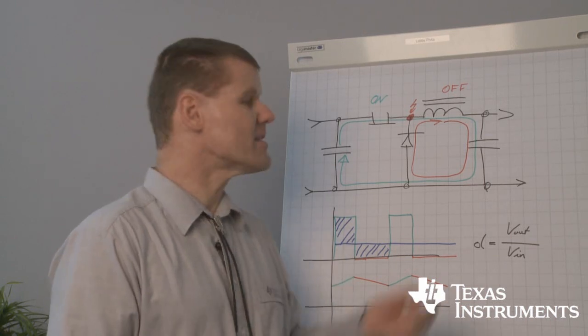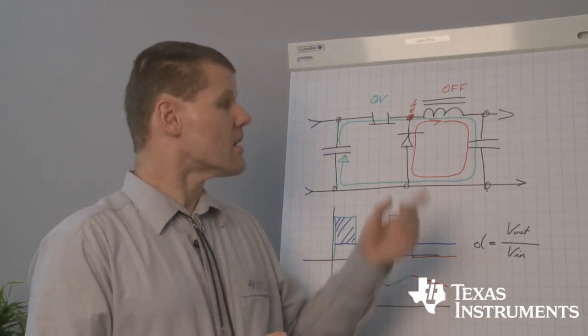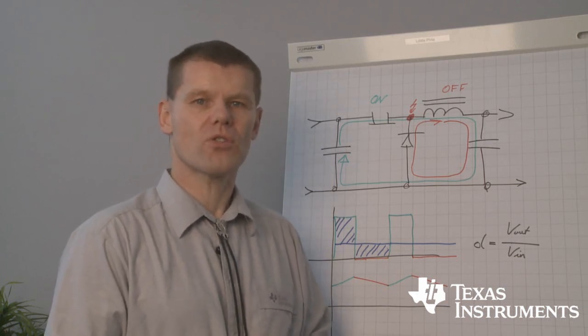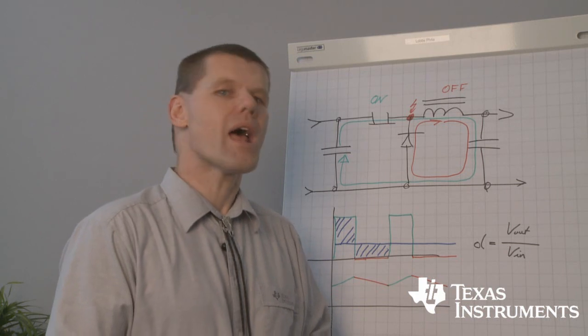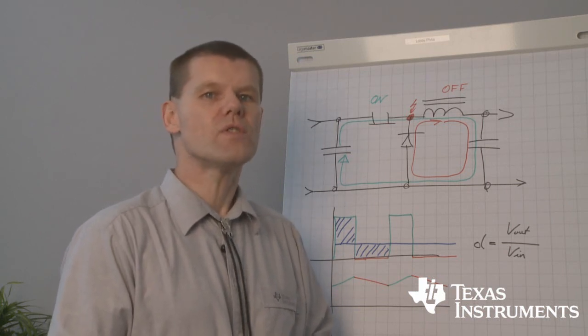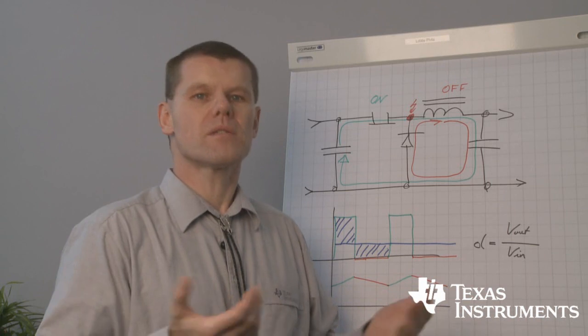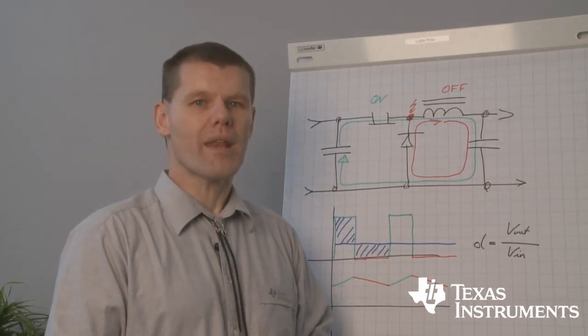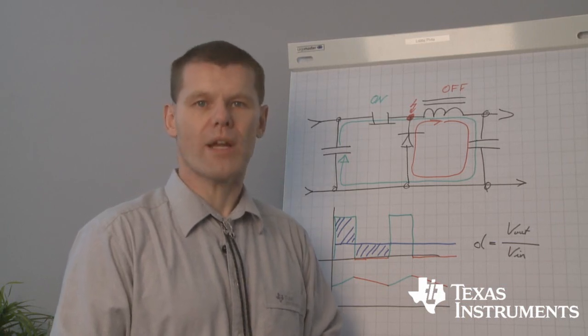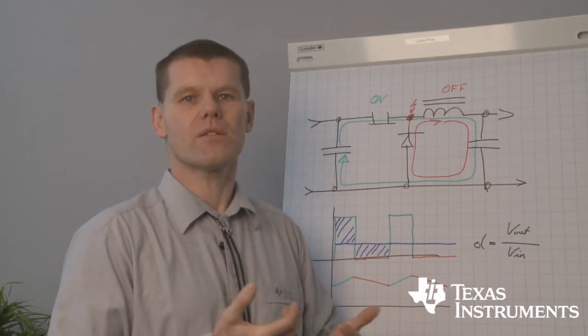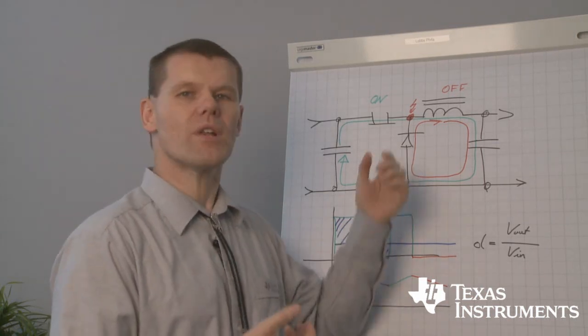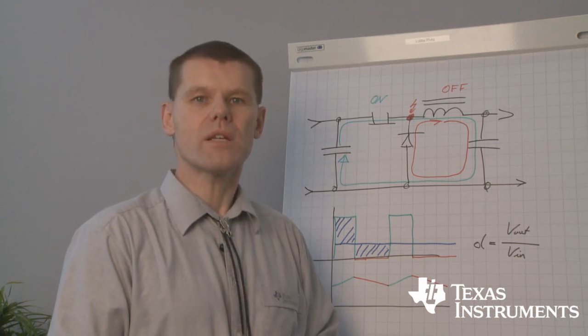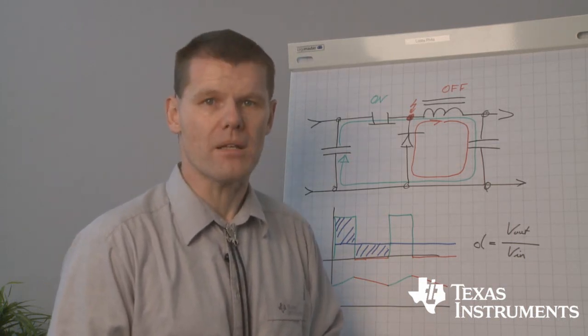Inside our power stage, there is a very lossy element, the freewheeling diode. The forward voltage of this diode causes a voltage drop in a range of 500, 600, 700 millivolts. And at a high current, the efficiency of our power stage will be very poor. So, we have to replace this lossy element by another MOSFET called synchronous rectifier. This synchronous rectifier needs the right control and emulates the function of our freewheeling diode. That's an easy method to increase the efficiency of the buck power stage.